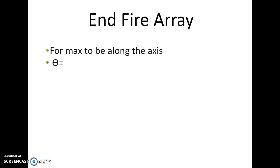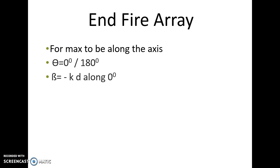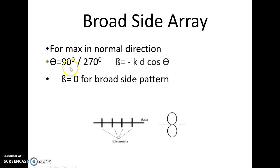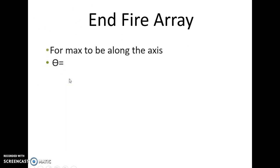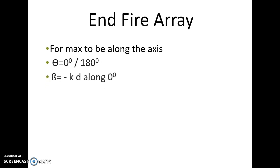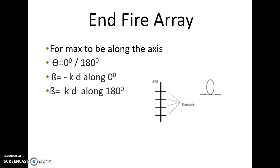Applying the same conditions to the end-fire array, where the radiation pattern is along 0 or 180 degrees: substituting θ = 0° gives β = −kd, meaning to get maximum radiation along 0 degrees the progressive phase shift must be −kd. If we want the maximum radiation lobe along 180 degrees, the progressive phase shift β should equal +kd. These two different values of progressive phase shift correspond to the two radiation patterns shown.